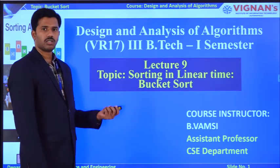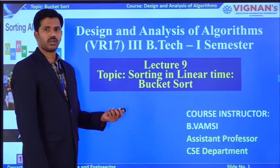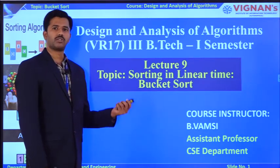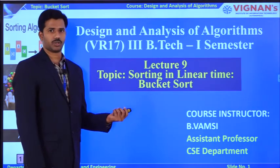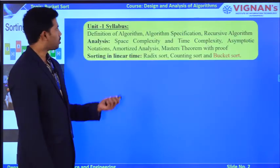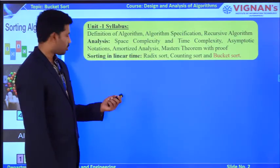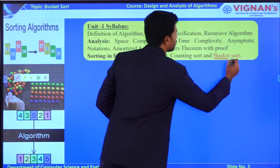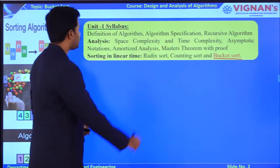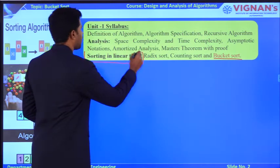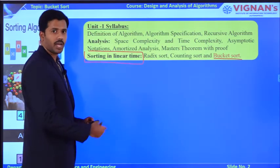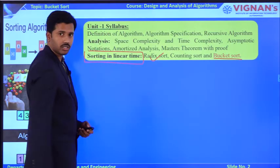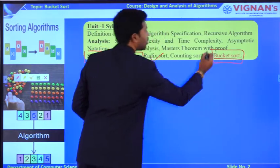Now try to focus on what is the procedure of bucket sort and how this algorithm will convert the unsorted array into sorted manner, as well as its analysis. This is going to be our Unit 1 syllabus. In the sorting in linear time chapter, we are going to have two concepts. In the last class we completed Radix sort.